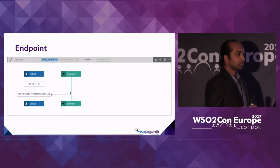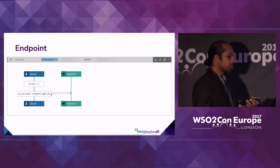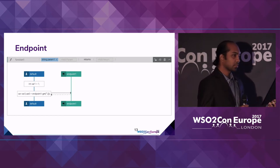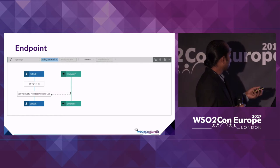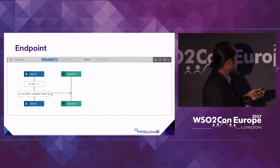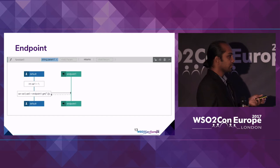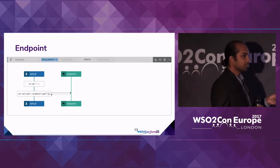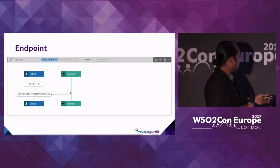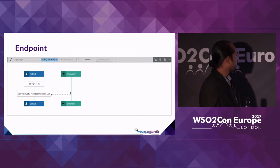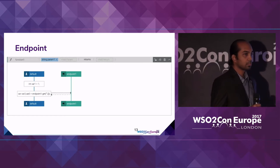This is how we represent an endpoint. A connector is an external system that we communicate with. The external system is also represented by a lifeline. In order to communicate with the external system, we have a concept called actions. The difference with the action statement is that you have communication arrows drawn to the particular endpoint you perform the action with. This is a GET action performed on endpoint 1.